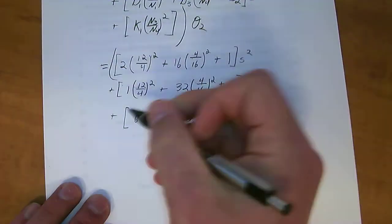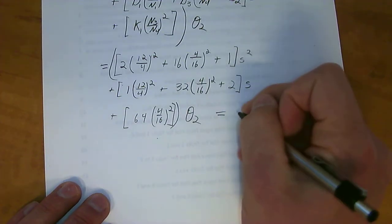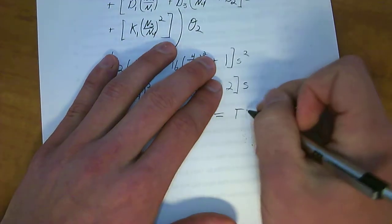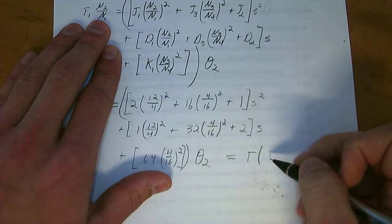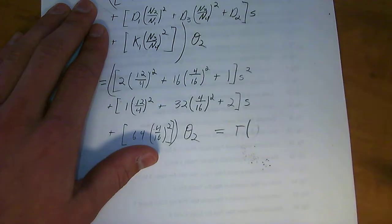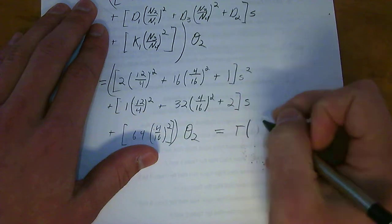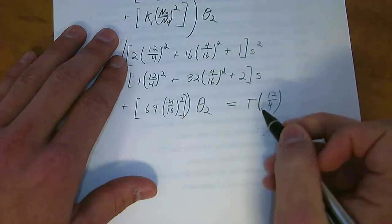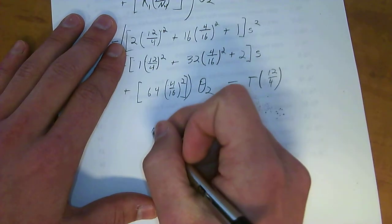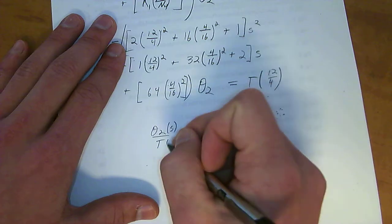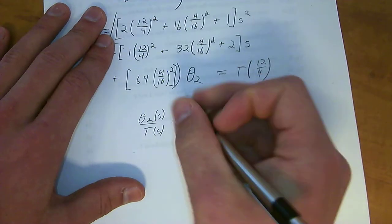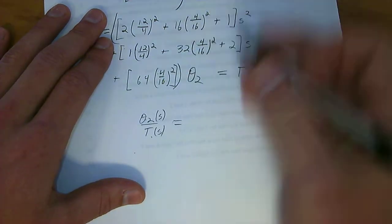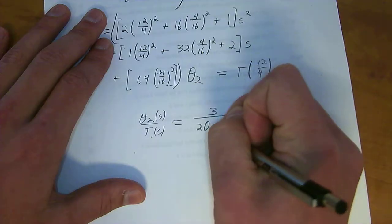And since this is in respect to theta 2, you can set it equal to T of S which is equal to T1 times 12 over 4. So now we have T and theta 2. In order to get our transfer function, we have to have theta 2 all over T. And if you want to do with respect to S, that's fine. I don't normally do that, but if you want to, that's great. This is output over input. Is equal to, if you solve out all these numbers up here, you should end up with 3 all over 20 S squared plus 13 S plus 4. And that is your transfer function.